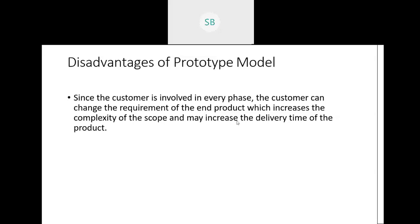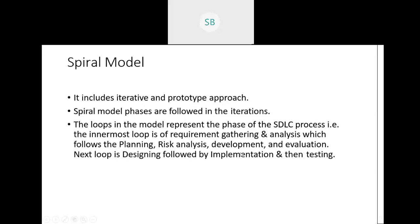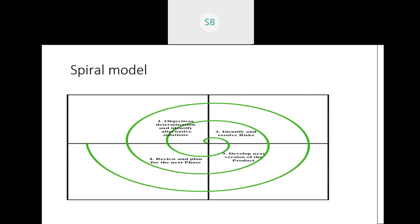Moving to the next model: the spiral model. You can check the diagram — it looks like a spiral. The spiral model is divided into four quadrants, and importantly, risk analysis is also done here.